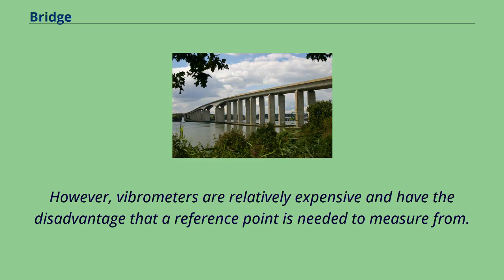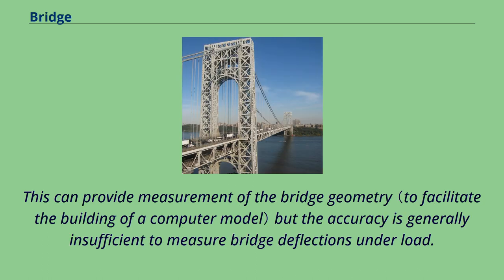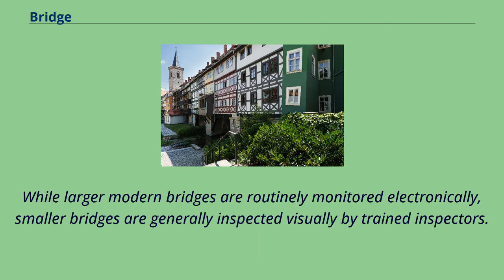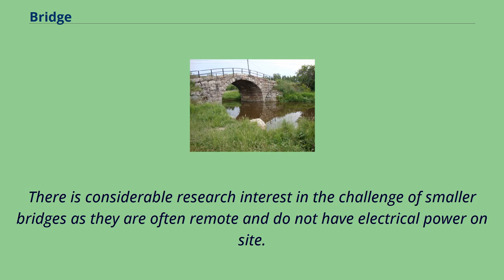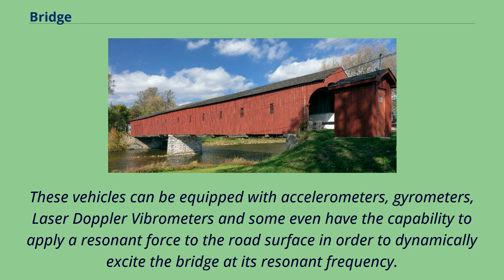However, vibrometers are relatively expensive and have the disadvantage that a reference point is needed to measure from. Snapshots in time of the external condition of a bridge can be recorded using LiDAR-based bridge inspection, which can provide measurement of the bridge geometry, though the accuracy is generally insufficient to measure bridge deflections under load. While larger modern bridges are routinely monitored electronically, smaller bridges are generally inspected visually by trained inspectors. There is considerable research interest in the challenge of smaller bridges as they are often remote and do not have electrical power on site. Possible solutions include the installation of sensors on a specialist inspection vehicle that can drive over the bridge to infer information about the bridge condition. These vehicles can be equipped with accelerometers, gyrometers, laser Doppler vibrometers, and some can even apply a resonant force to the road surface in order to dynamically excite the bridge at its resonant frequency.